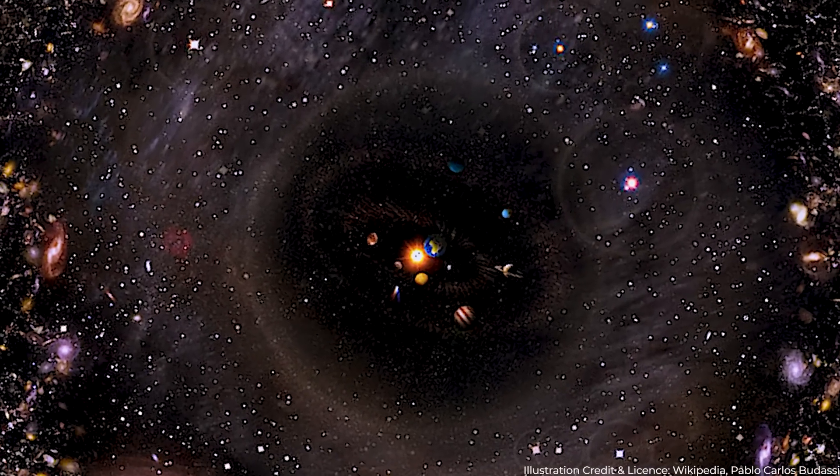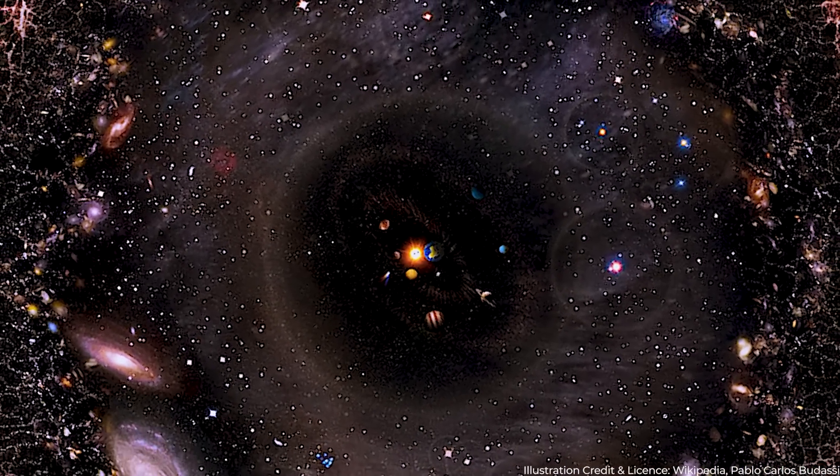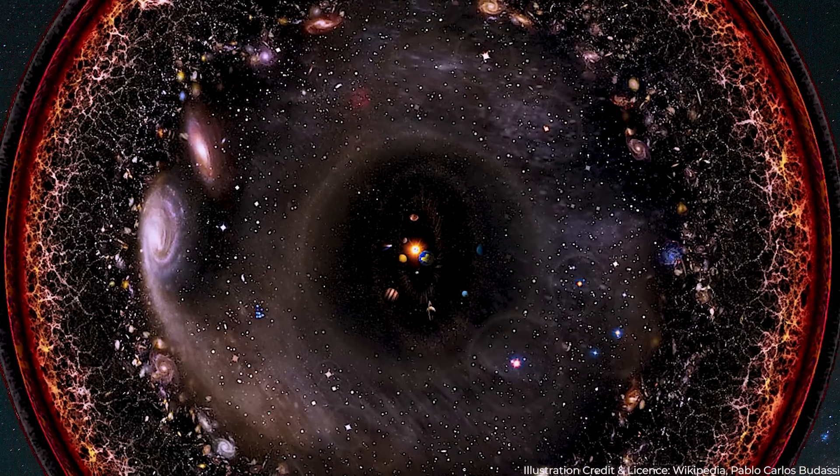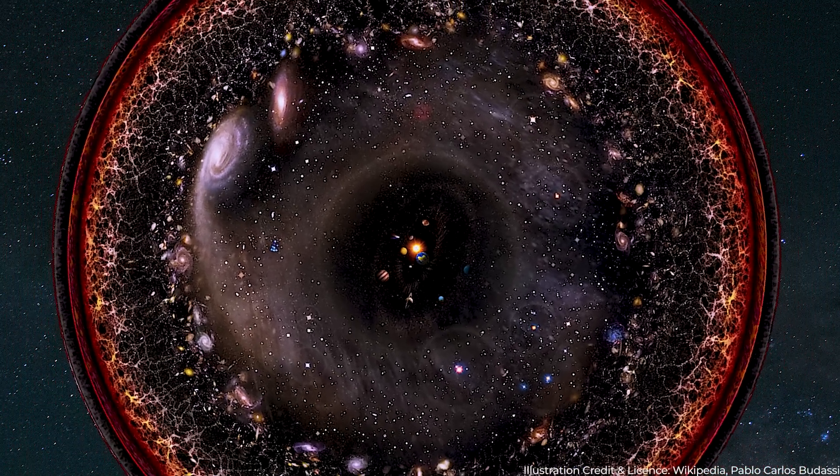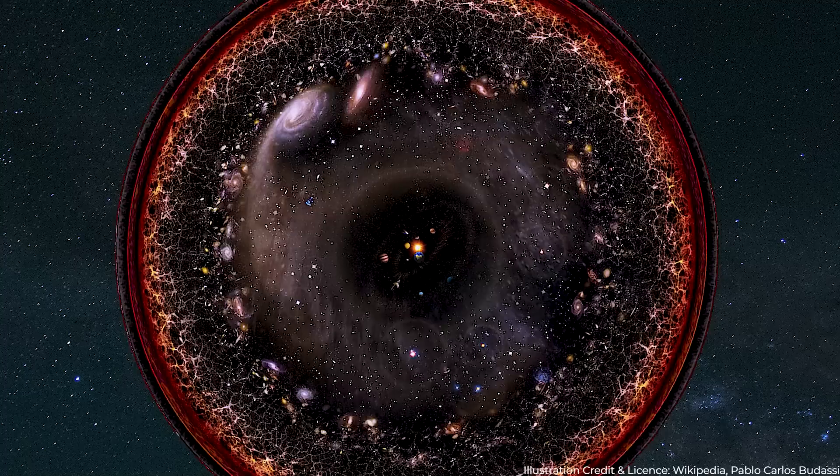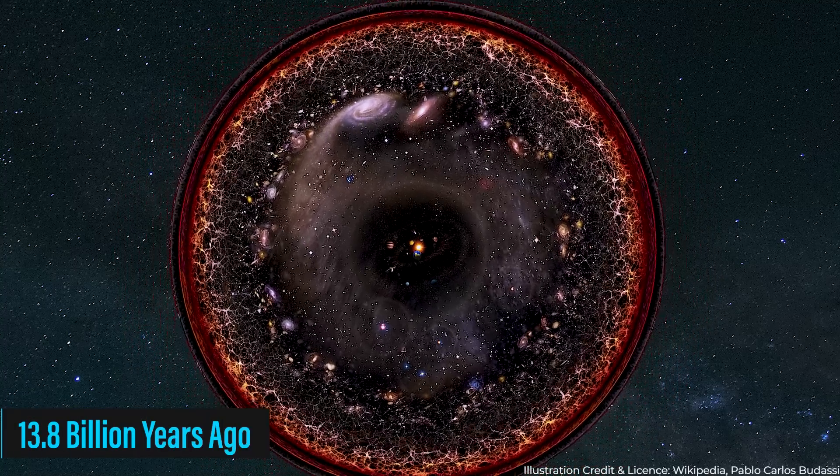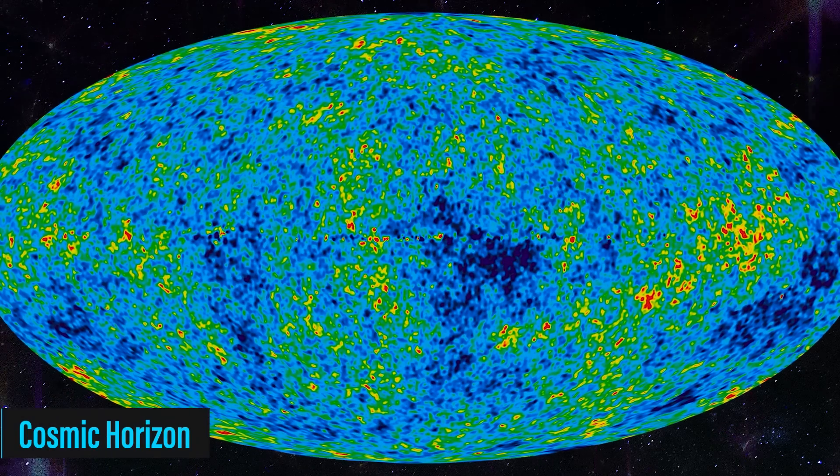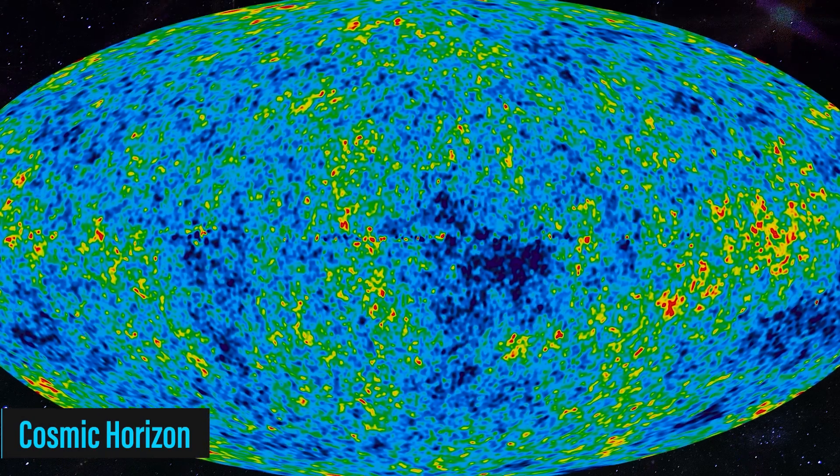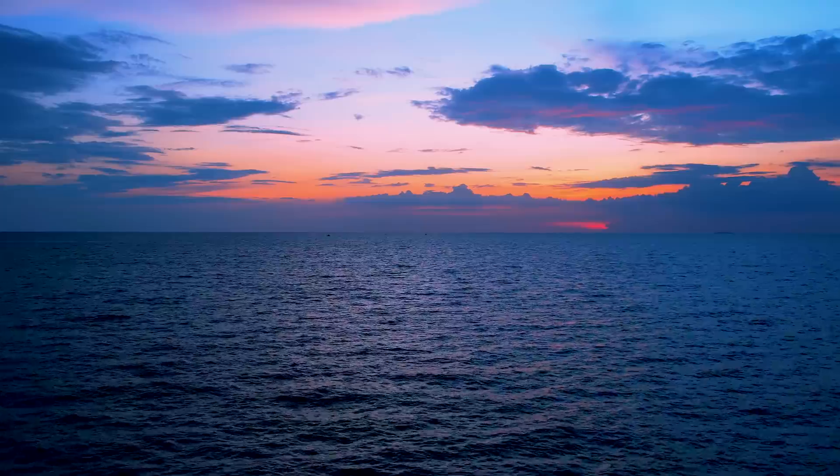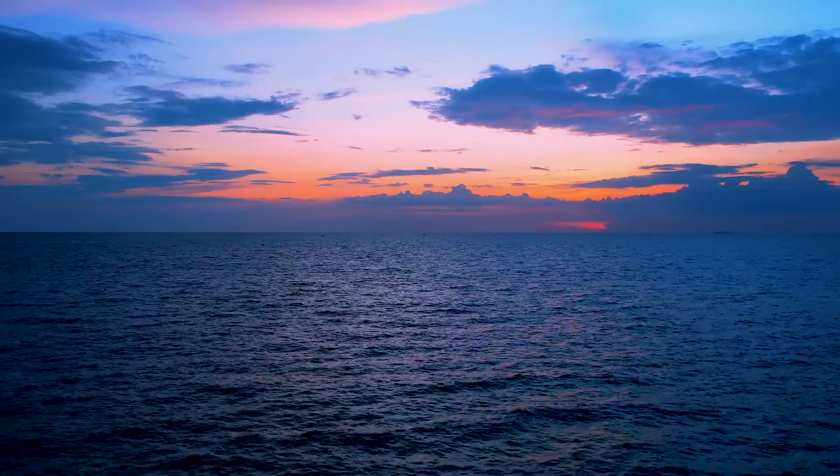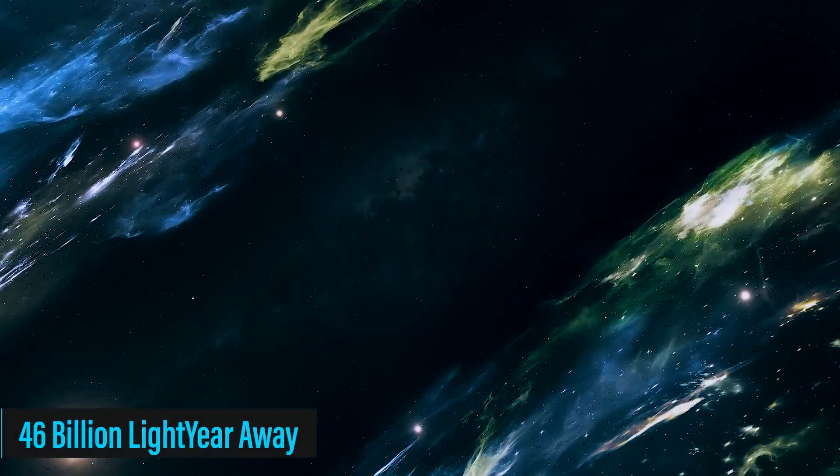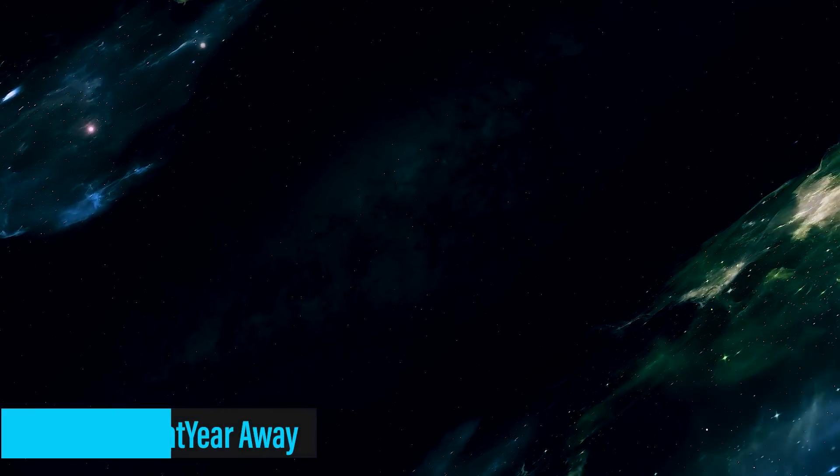Now, the observable universe isn't just a flat disk or an infinite expanse. It's more like a massive sphere, with our little Earth snug at the very center. We can only see as far as the light has traveled since the universe came into being, which is approximately 13.8 billion years ago. This ultimate boundary, the farthest edge we can see, is known as the cosmic horizon. It's almost like looking out to where the sky meets the ocean, except this ocean is a sea of stars and galaxies.